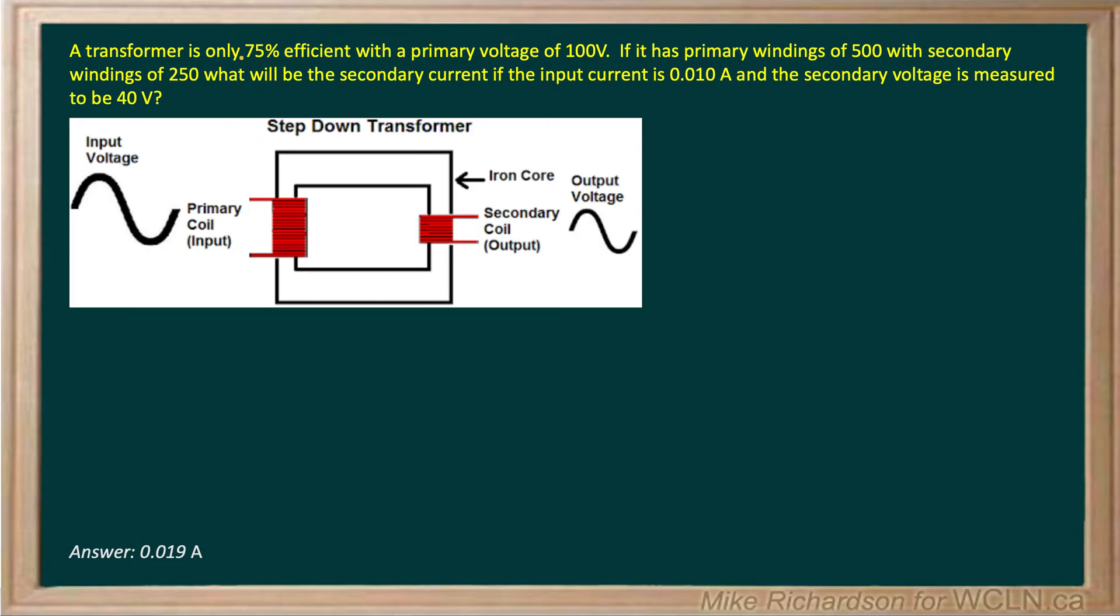A transformer is only 75% efficient. So this is a non-ideal transformer. 75% efficient means 75% of its original energy gets into the secondary coil.